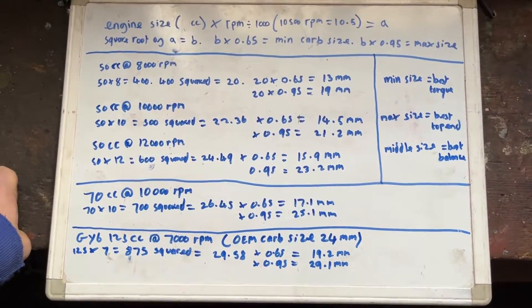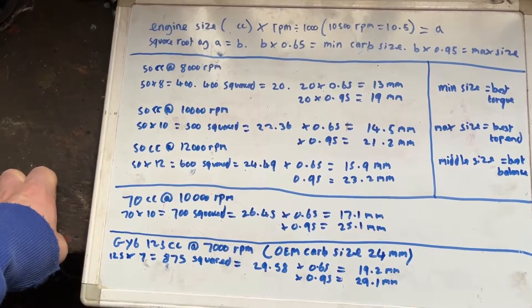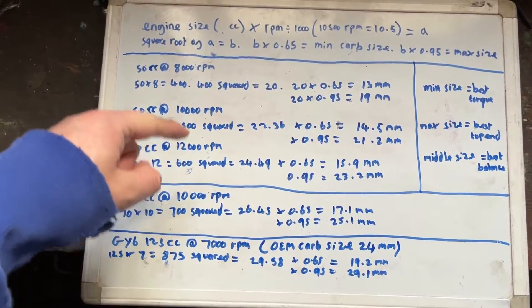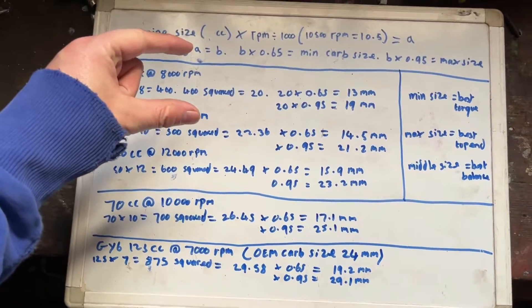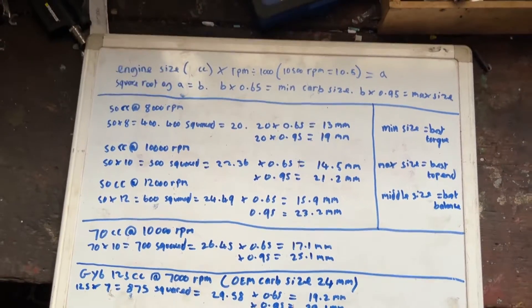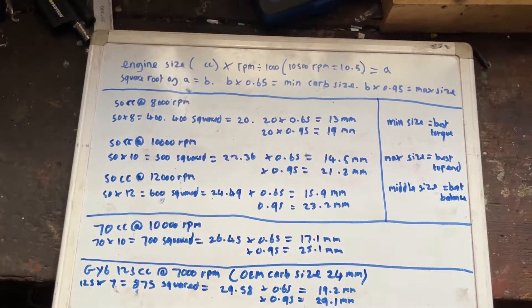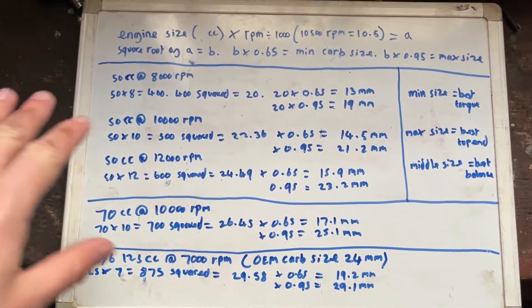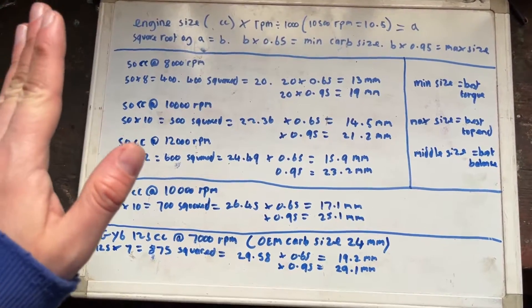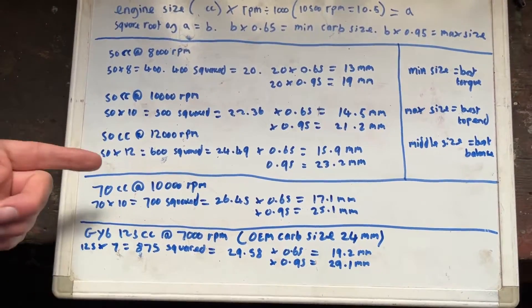And certainly once you get to multi-cylinder machines, it probably works just fine if, for example, you have like a four-cylinder bike. If you work this out, because this is just for an individual cylinder, if you work this out for one individual cylinder, it will give you the carb size for each of them if you're going to run four carbs on a four-cylinder engine. But once you start getting into like two carbs for four cylinders or one carb or something like that, I don't know how well this works. I'm not amazing at maths to be fair. I just know that this works really well for single-cylinder engines, certainly smaller capacity engines.